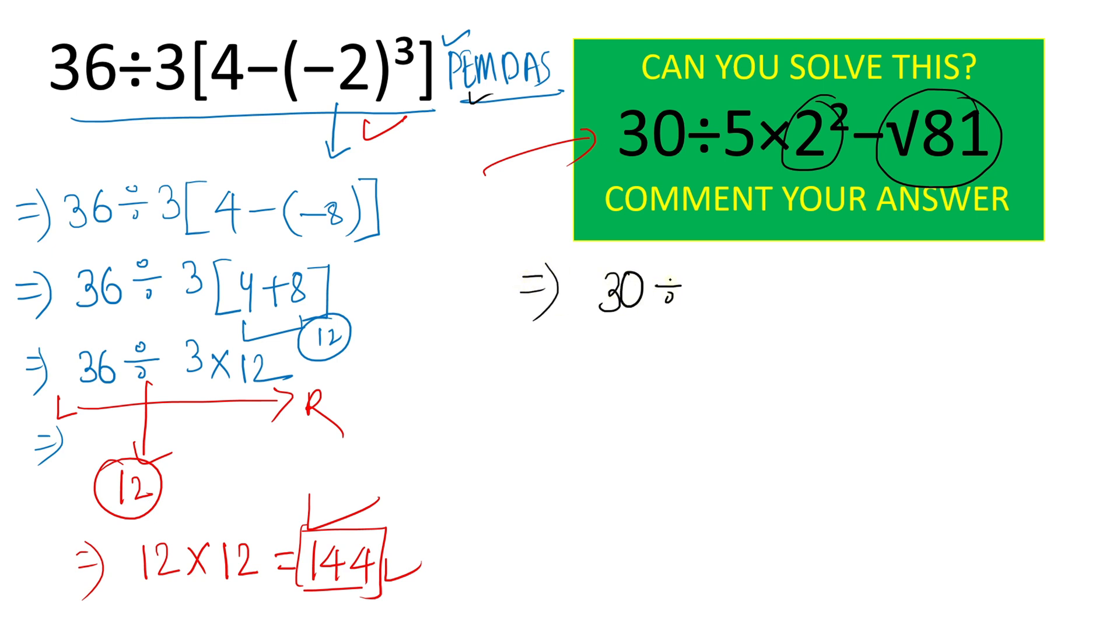So we will write 30 divided by 5 times 2 square is 4, and root 81 is 9. So we will simply put the value here, 5 times 4 minus 9. This is the value.